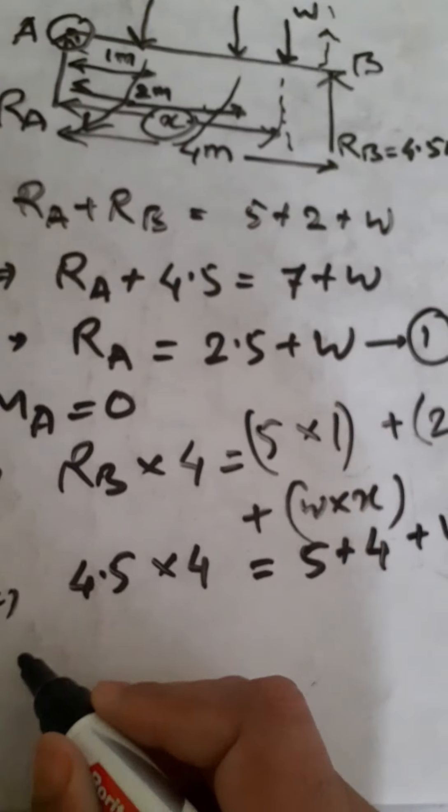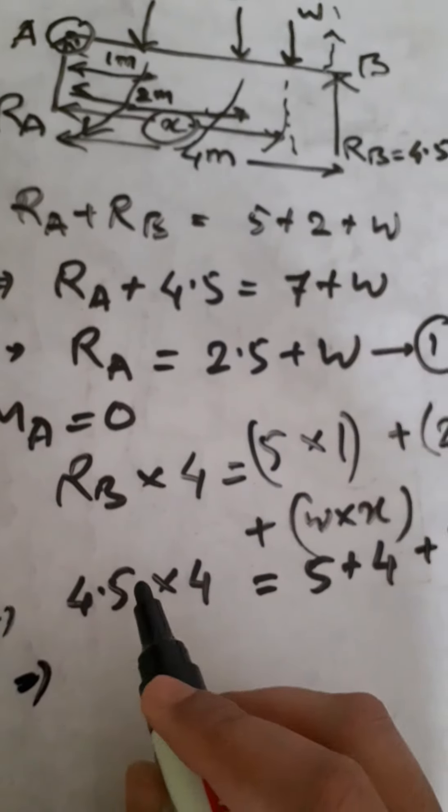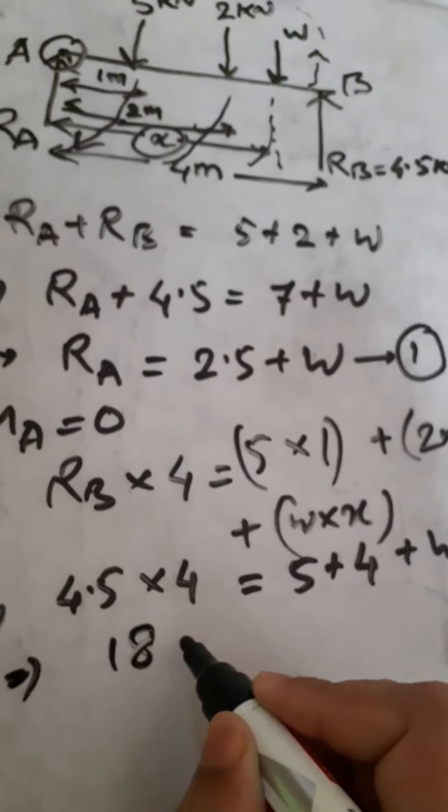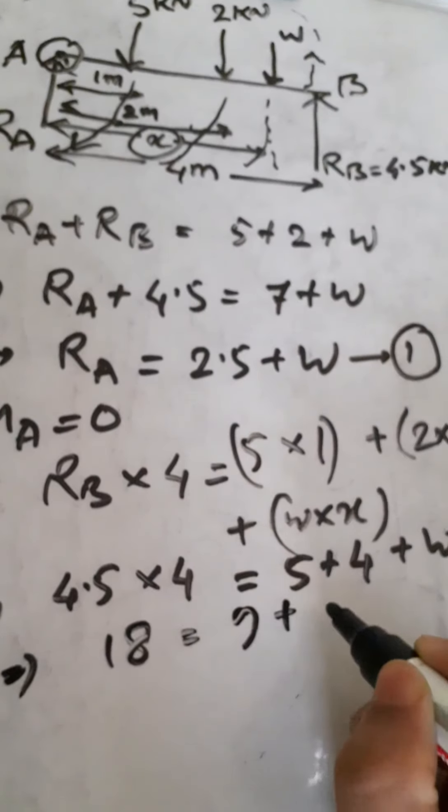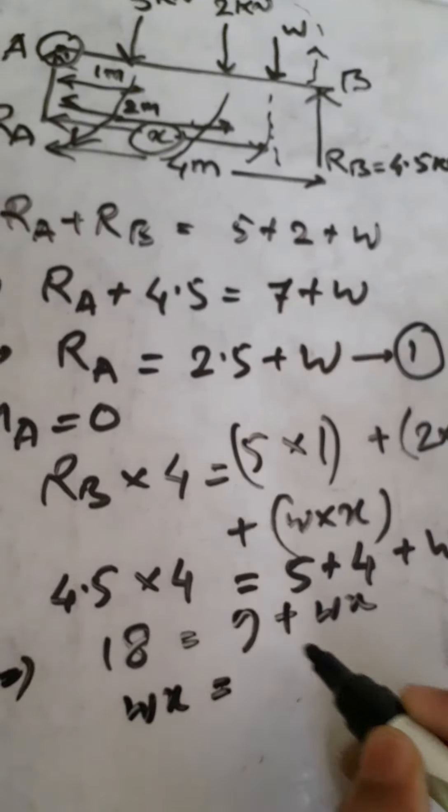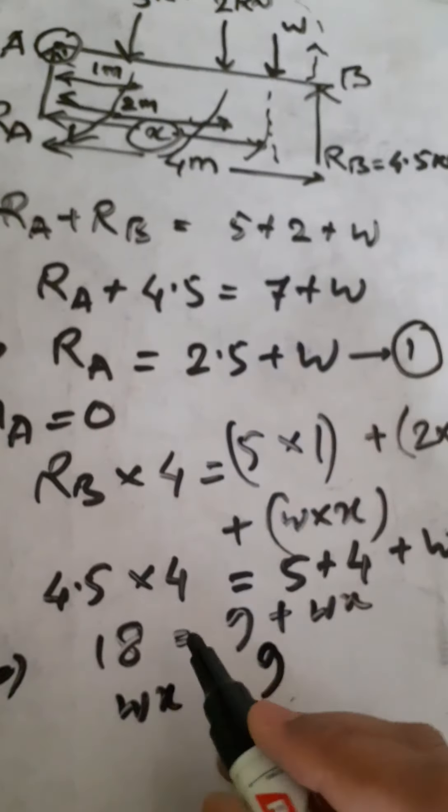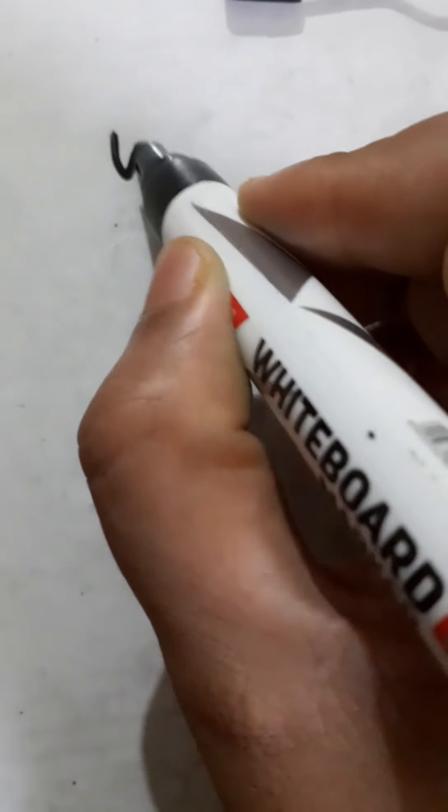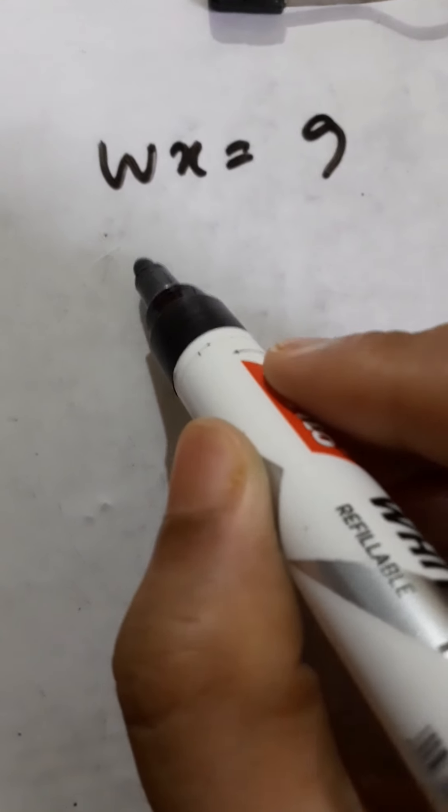This implies 18 equals 9 plus Wx, so Wx will become 9. Therefore Wx equals 9, so the x value will be x equals 9 by W.